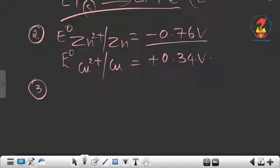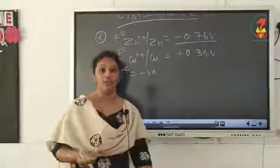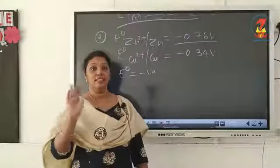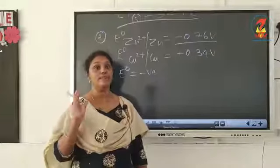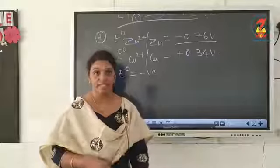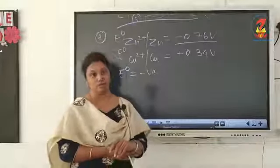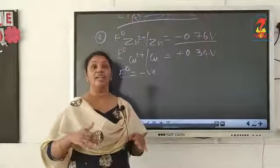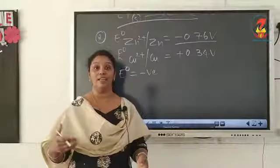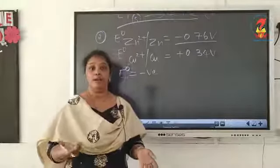The third application: greater the oxidation potential — that is, lower the reduction potential, so E° value is negative — greater is the reactivity of the element, as it has more tendency to lose electrons. Group 1, 2, and 13 elements have greater tendency to lose electrons and get oxidized. If E° values are given, you can arrange elements in decreasing order of their reactivity.